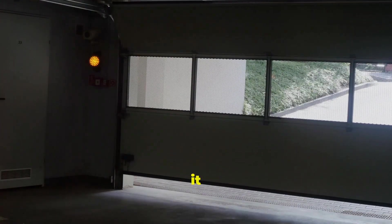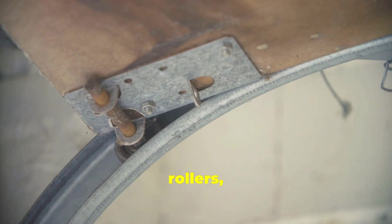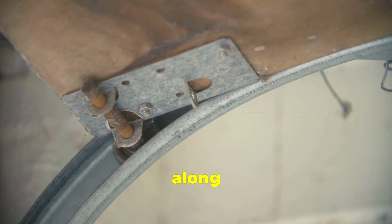Does your garage door make a racket every time it opens or closes? It could be due to worn or damaged rollers, which are crucial for smooth operation along the tracks.